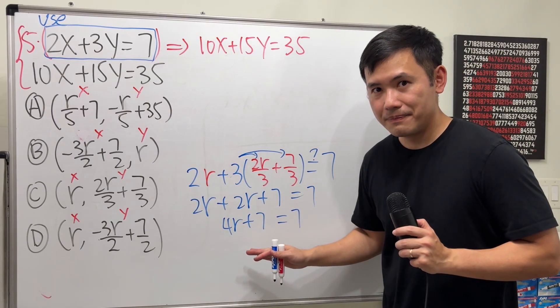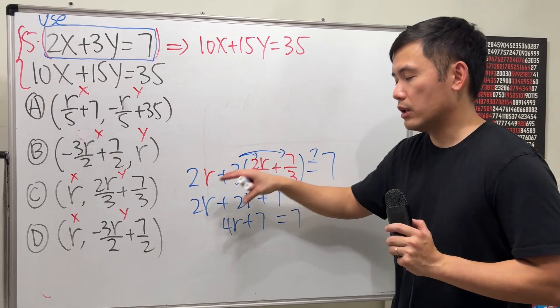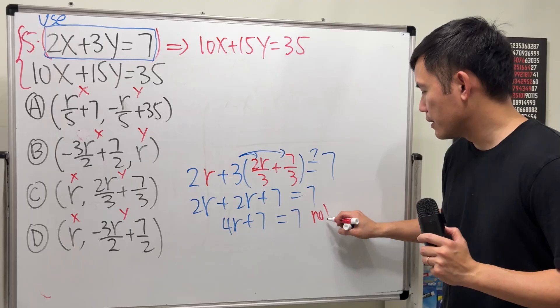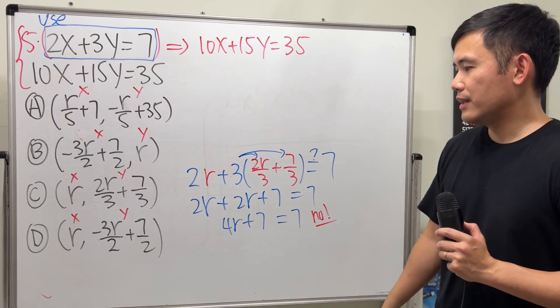We are not solving for r. We are trying to make sure that the left-hand side is identical as the right-hand side. So, no. Because we have the 4r right here. So, no.